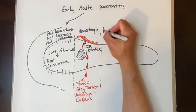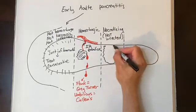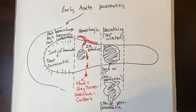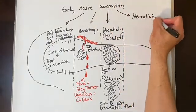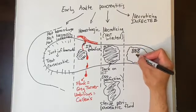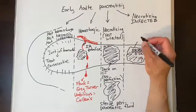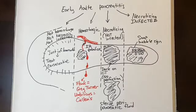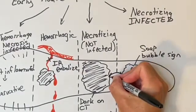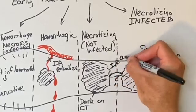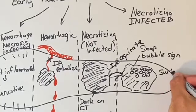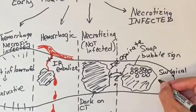Necrotizing non-infected pancreatitis: a CT scan with triple-phase contrast shows no IV contrast entering a segment of pancreas, indicating no blood flow — by definition, necrotic. There may also be sterile peri-pancreatic fluid collections. Not all necrotizing pancreatitis is infected. When it does become infected, signs include leukocytosis, acidosis, fevers, and on CT the soap bubble sign — bacteria in the infected pancreas making small air bubbles. If unsure whether the pancreas is infected, IR needle aspiration and culture may be reasonable.